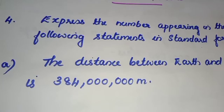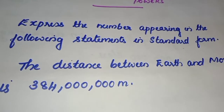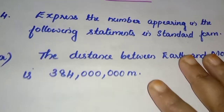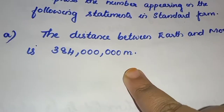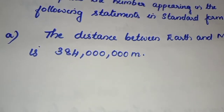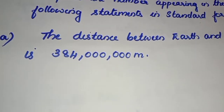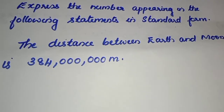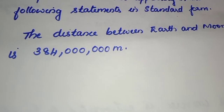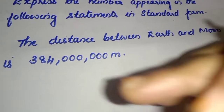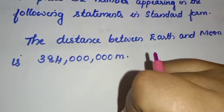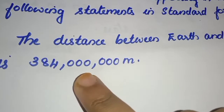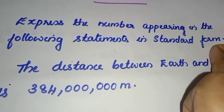So, what is the 4th question? Express the numbers appearing in the following statements in standard form. What is the standard form? The first sub-question: the distance between Earth and Moon is 384,000 km. We are going to change this number to standard form.